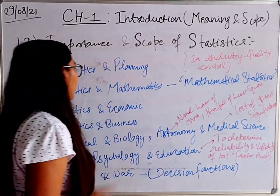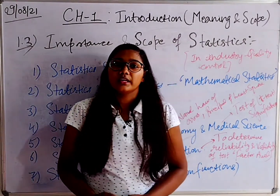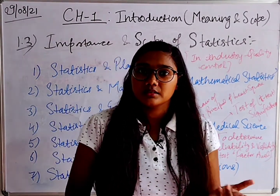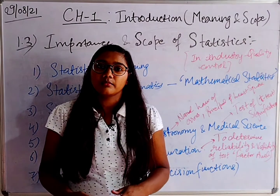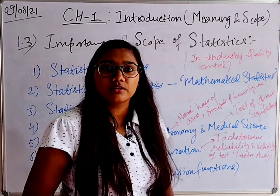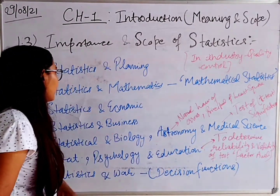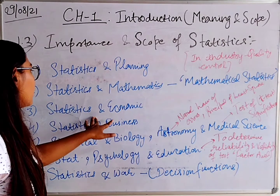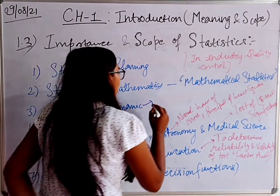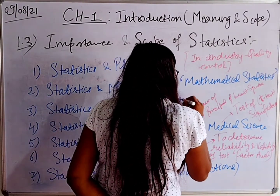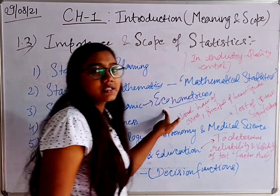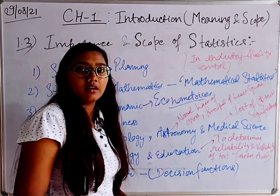The third area is Statistics and Economics. In economics, statistics is used mainly for forecasting, quality assessment, and marketing. Data on wages, prices, demand, and consumption are analyzed using statistics. This combination is known as Econometrics.